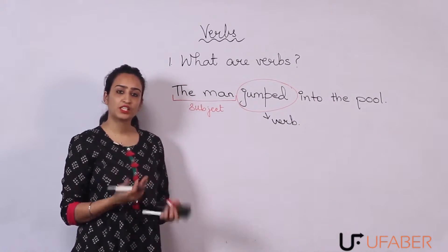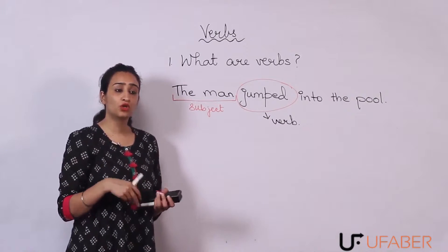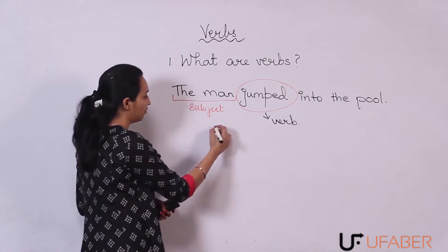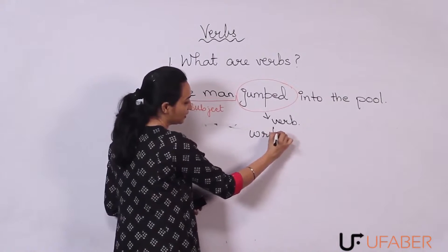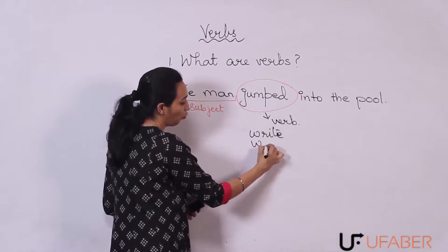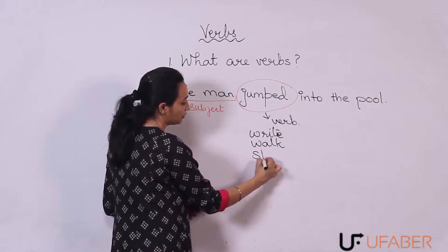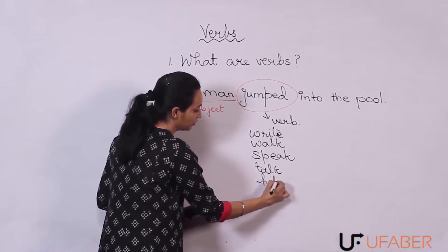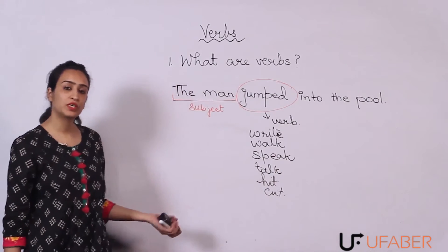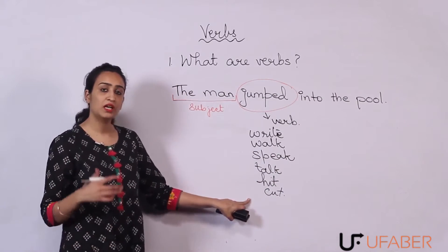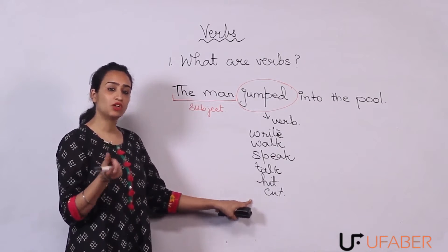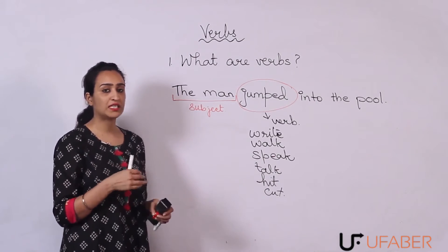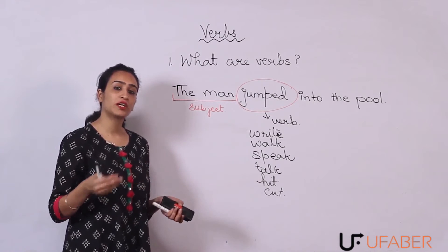A verb is nothing but an action word — any word which will tell you to do an action or will suggest an action is being done will be the verb. For example: jump, walk, speak, talk, hit, cut — all these words are your verbs. They will tell what the subject is doing. So to use the right verb with the subject is very important. We can't say 'the dog is talking'; we have to say 'the dog is barking'.